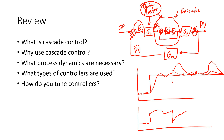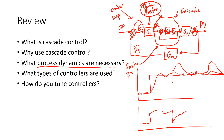We're also going to talk about the process dynamics that are necessary. This inner loop has to be much faster than the outer loop. We typically want it to be about three times faster than the outer loop in terms of following the set point, and we'll show you an example of why that's the case. We'll also talk about what types of controllers are used and how to tune these cascade controllers.